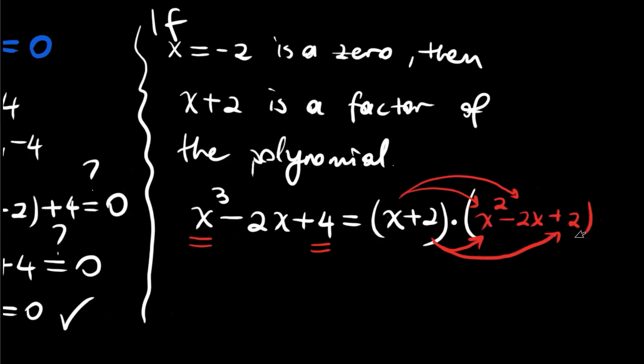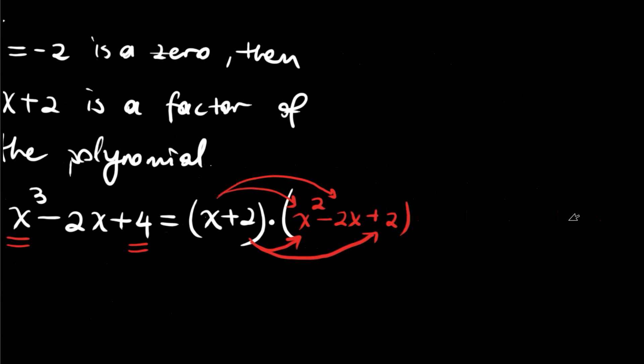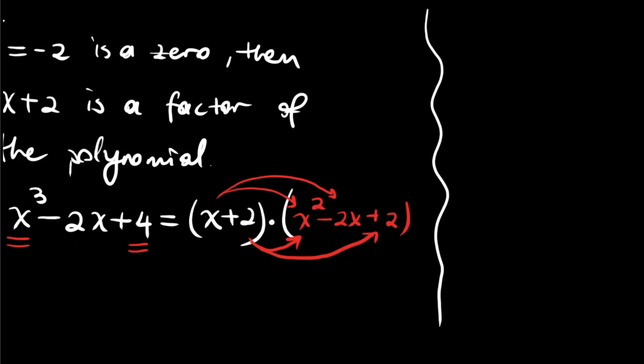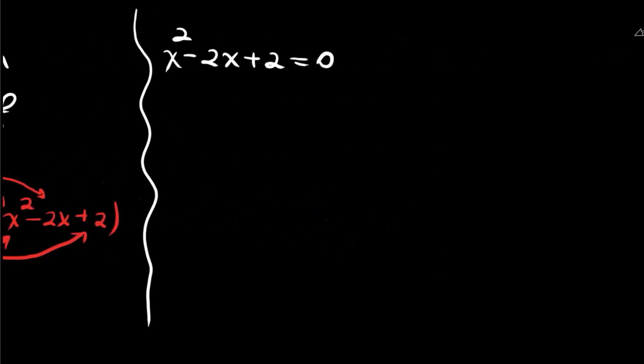Now let's continue this way. We will try to find x² - 2x + 2 = 0. This is a quadratic equation.